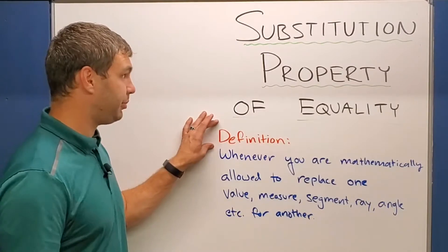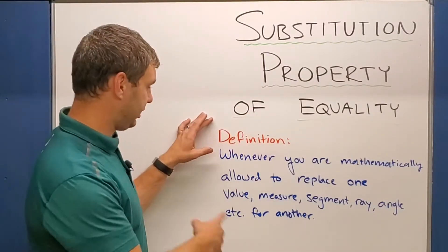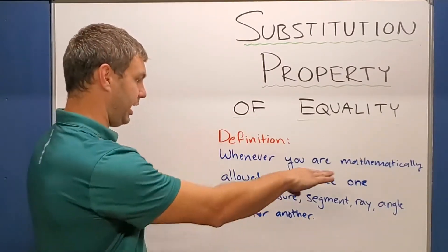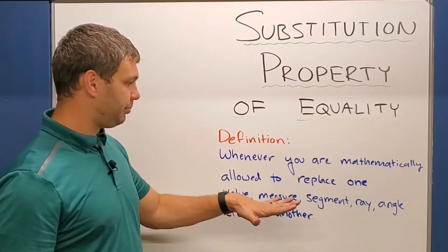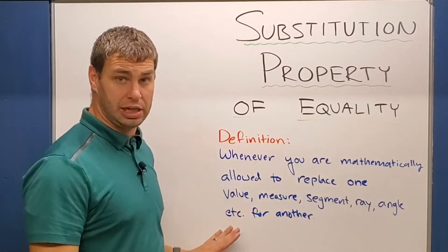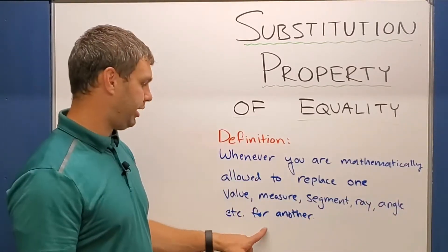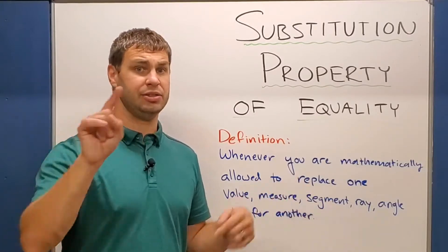The definition I'm going to use for the substitution property is this: it's whenever you are mathematically allowed to replace one value, measure, segment, ray, angle, or whatever, for another.